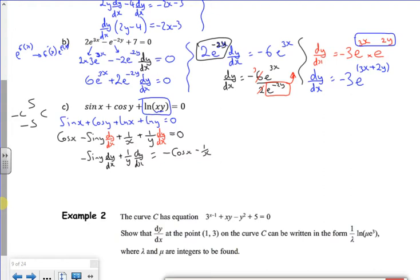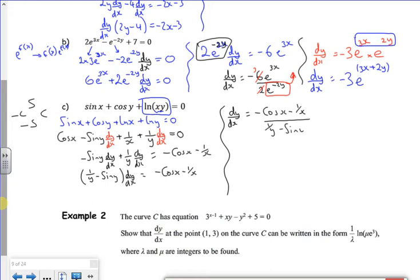If I take out the dy by dx as a factor. I'm just going to swap the 1 over y and the sine y over dy dx. It's minus cos x minus 1 over x over 1 over y minus sine y. There you go.